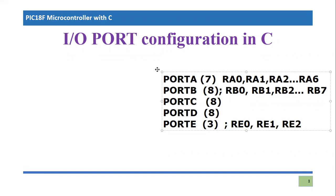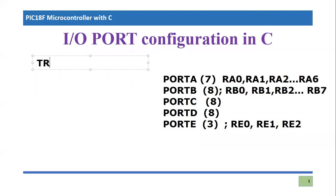By default, if one does not program or configure the ports, they are in input mode. For example, port A will be considered an input port if we do not configure it, and similarly port B will be considered an input port. One can easily configure it and convert that mode to output mode by using a control register known as TRIS. Every port has an associated control register — TRISA for port A, TRISB for port B, and so on.